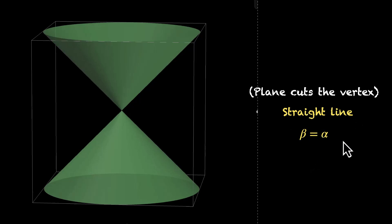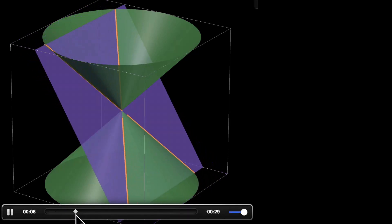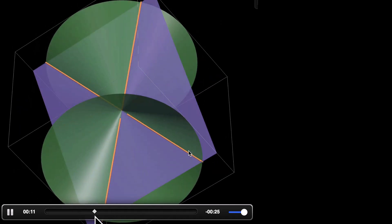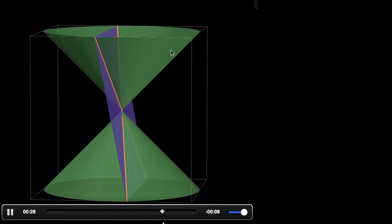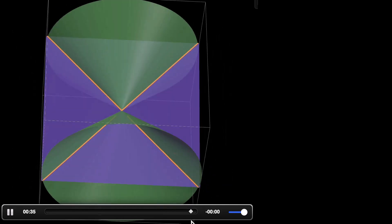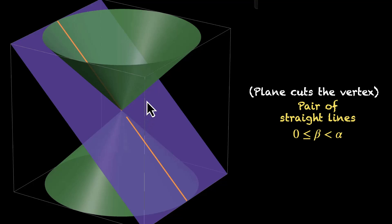What happens when beta is less than alpha? If we keep the plane passing through the vertex and reduce the angle, what we get is called a pair of straight lines — these are intersecting lines. Even if the angle is zero, we get a pair of straight lines. When the plane cuts the vertex at an angle beta between alpha and zero, we get a pair of straight lines. So, we've covered all types of conic sections: point, line, pair of straight lines, circle, ellipse, parabola, and hyperbola. Because these are slices that this plane makes on this cone, that's why they're called conic sections.